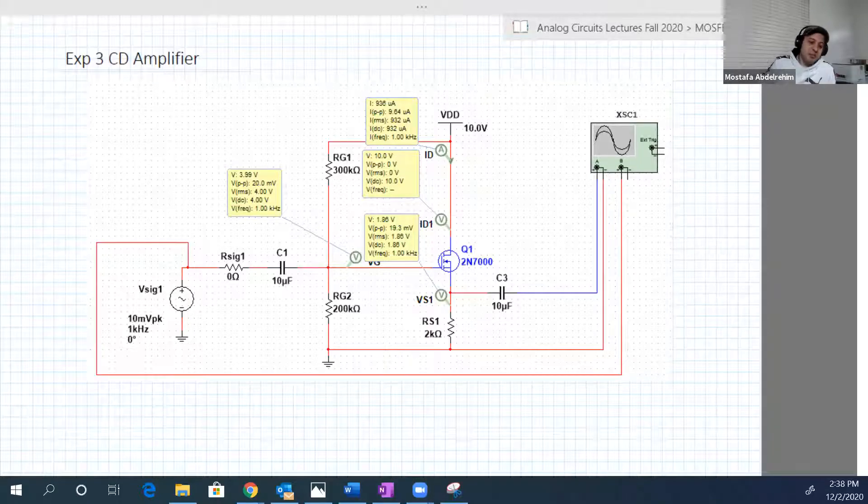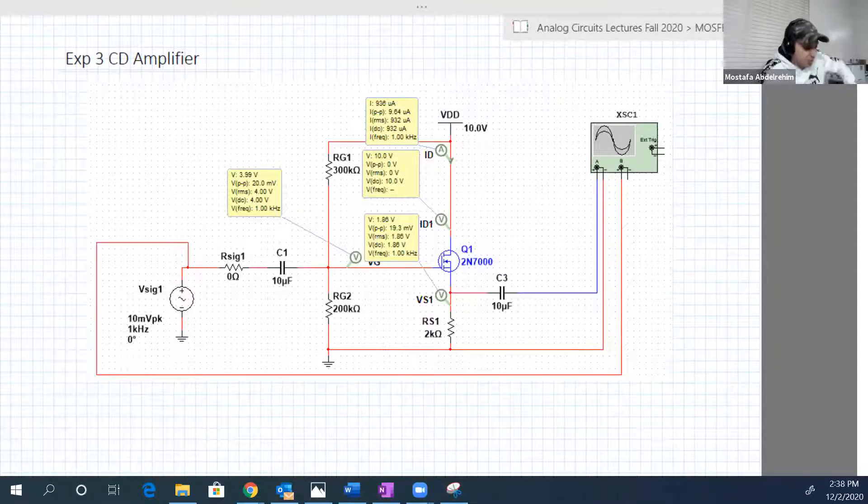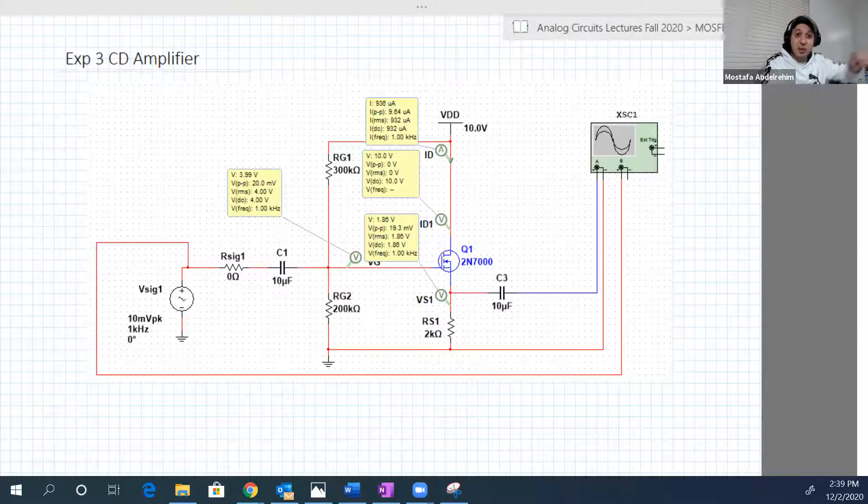Hello guys, so this is part 3, the common drain amplifier, the source follower. Here's the circuit that we're going to implement. Again, it is exactly similar to the circuit of experiment 1.